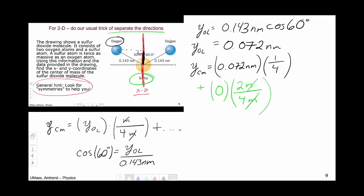Finally, we move on to this oxygen on the right that I've circled in red. We can see that the y position of this oxygen is going to be the same as the other one, so 0.072 nanometers. And the weight is going to be m over 4m. And again, the m's cancel.